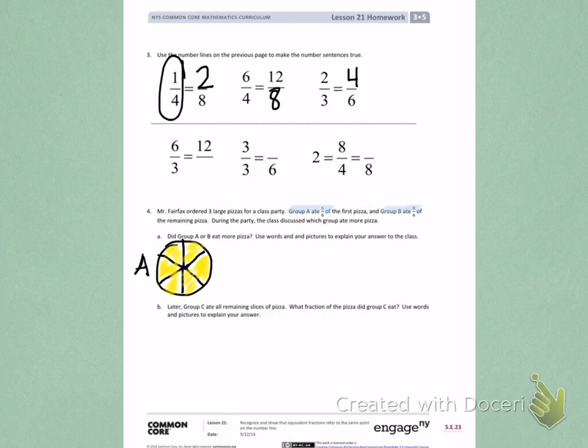Now group B ate 8 sixths of a pizza. So group B first ate 6 equal parts, just like group A did. 1 sixth, 2 sixths, 3 sixths, 4 sixths, 5 sixths, and 6 sixths. But group B was really hungry, so they had to eat more pizza to show 8 sixths. The denominator is still the same, so I'm still going to partition into sixths.